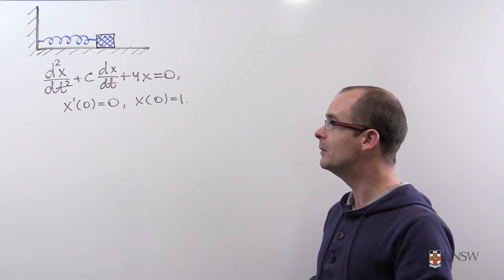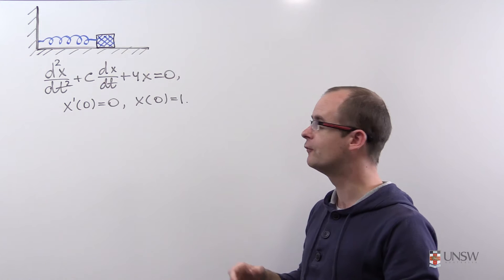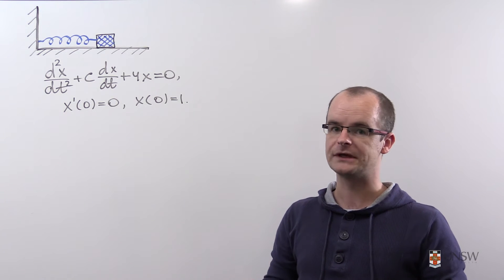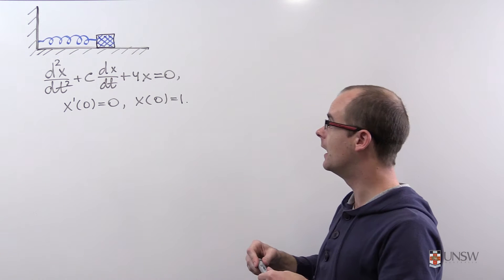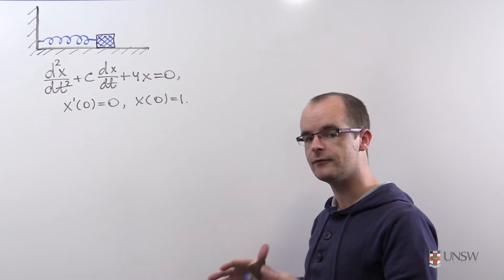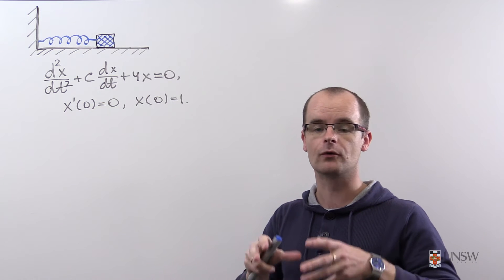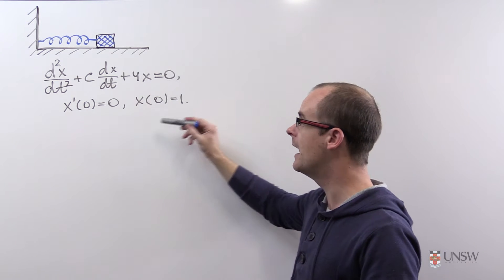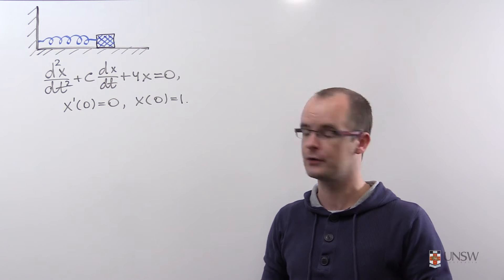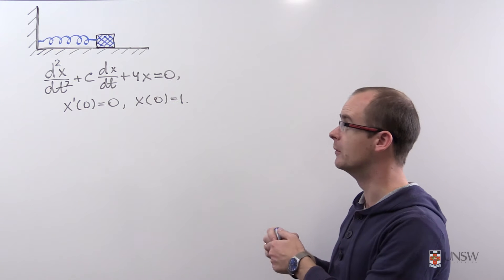We consider the physical problem about the block connected to a spring. This problem can be modeled using the second-order differential equation, where x, the function, stands for the distance of the block from its resting position. The movement of the block satisfies this second-order differential equation, and we also have the initial conditions: at time zero, the distance of the block from its resting position is 1, and its velocity is 0. The constant c stands for the coefficient of friction between the block and the surface.